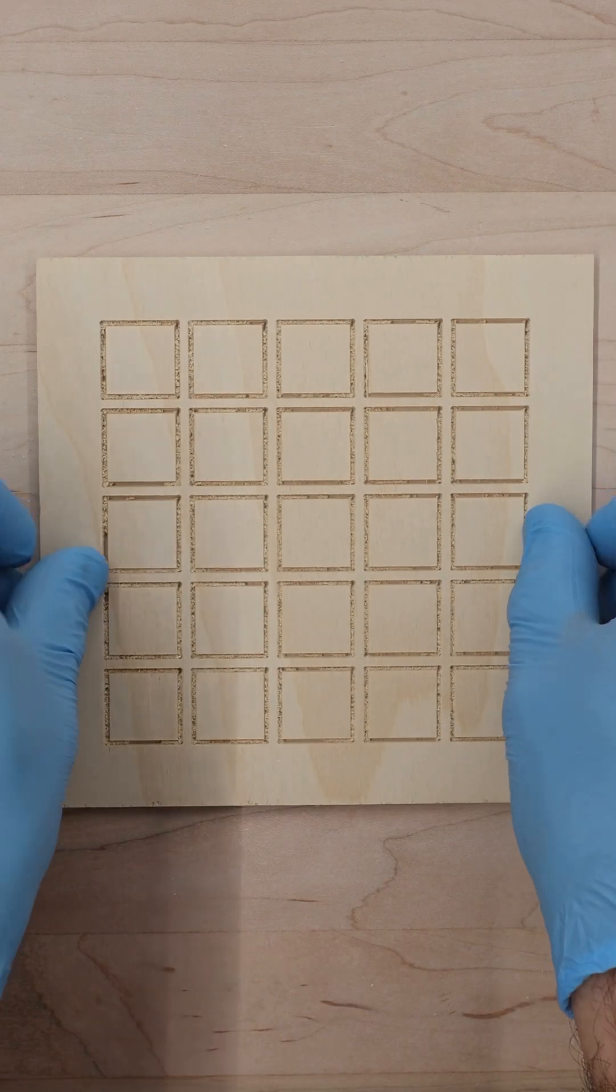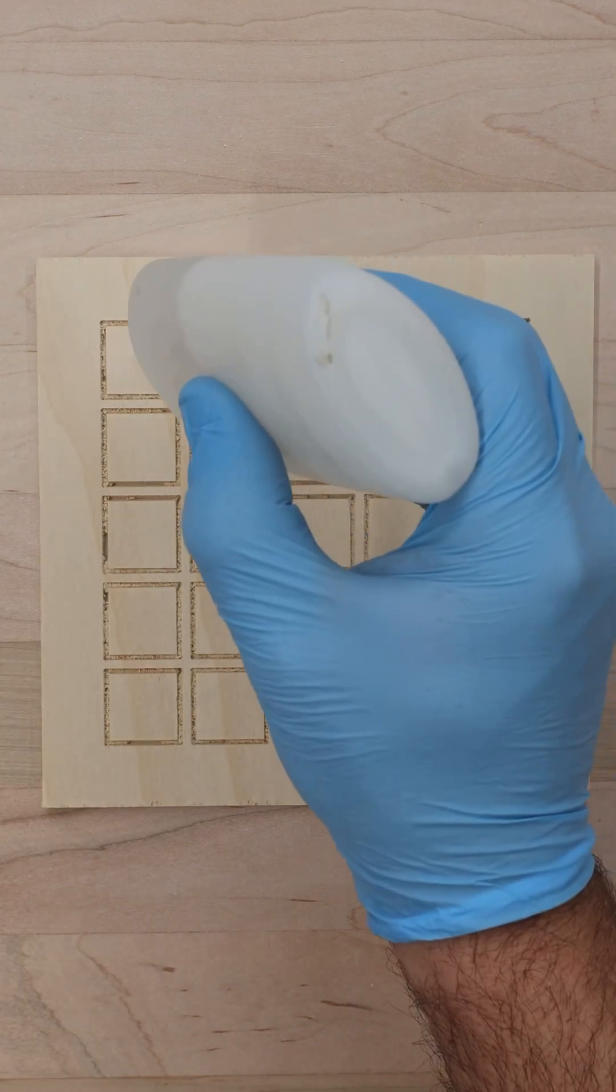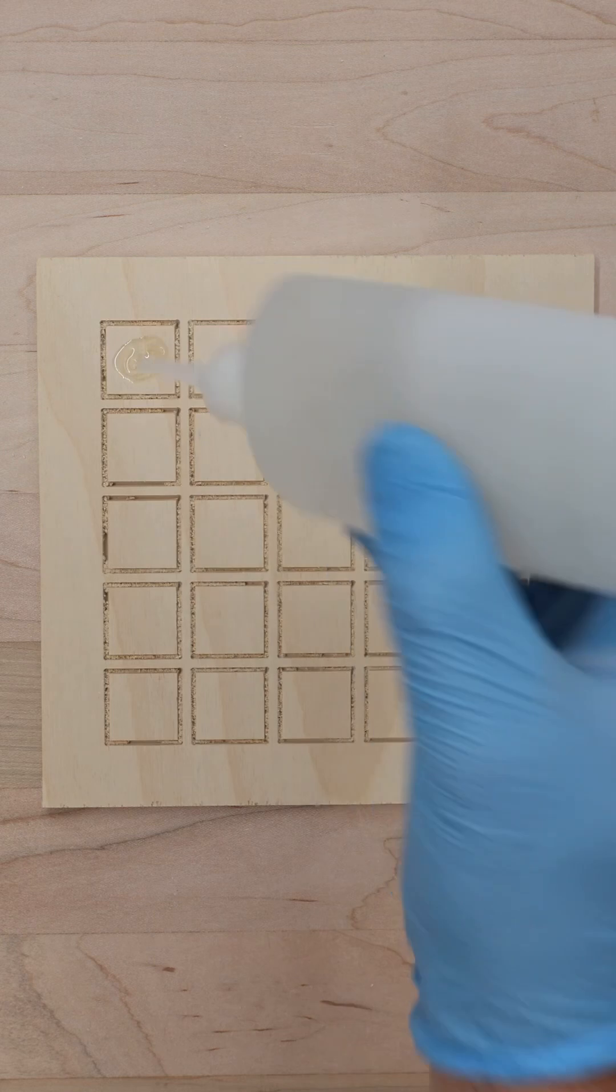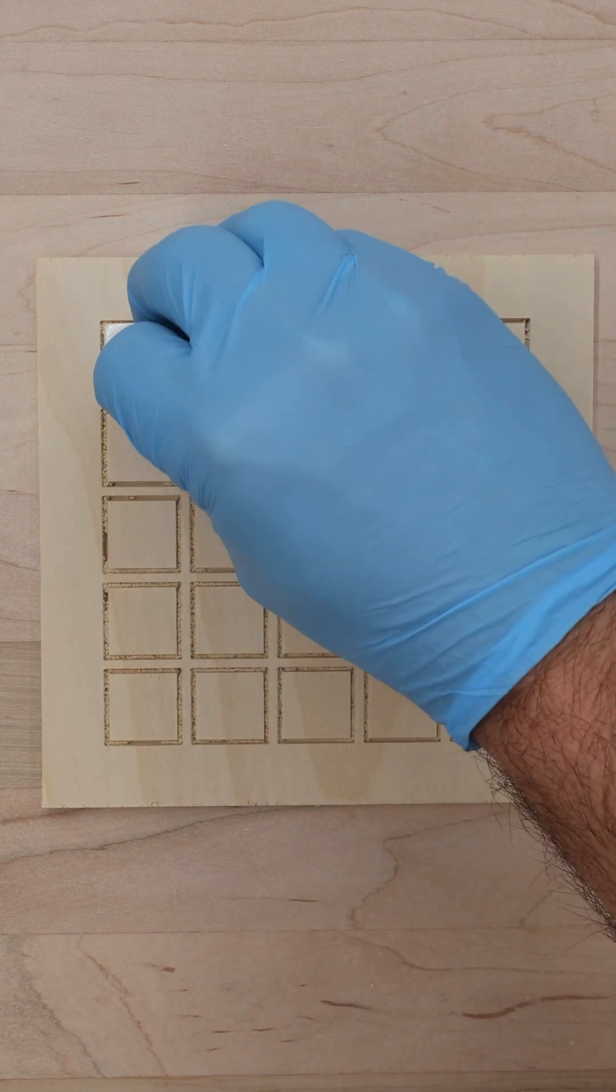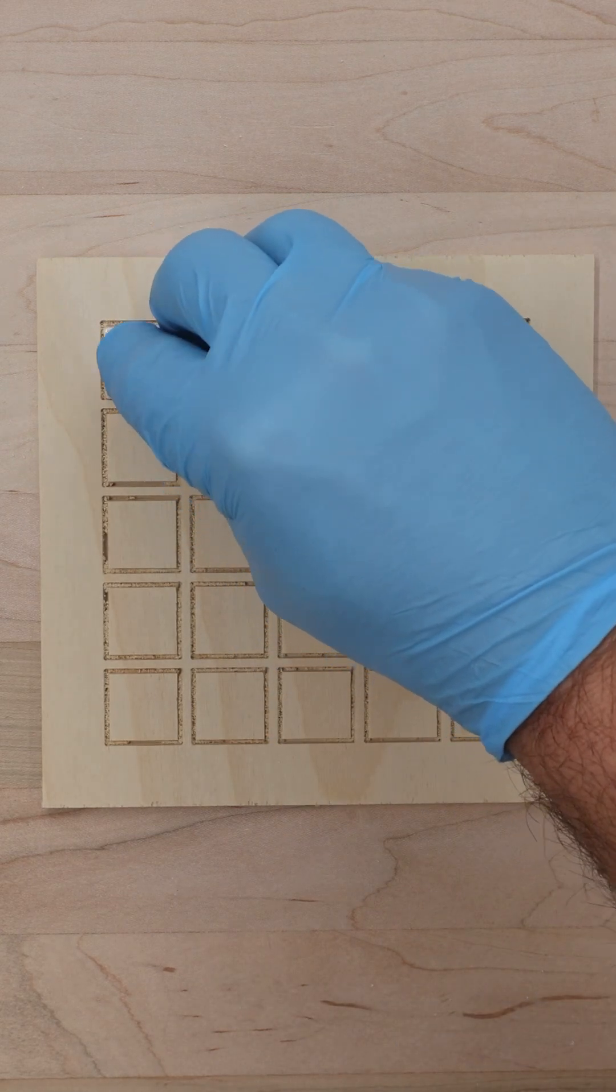Next we'll use this template that I created on the shop bot to help us batch out 25 tiles at a time. Apply a dab of CA glue and affix a tile to each square.